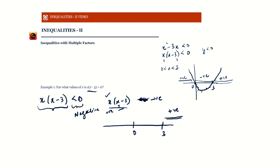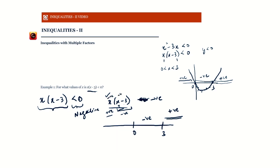Between zero and three, x is positive but x minus 3 is negative — for example, if x is two, x minus 3 becomes minus one. So exactly one factor is negative, making the product negative in that region. To the left of zero, x is also negative — for example x equals minus one gives x minus 3 equals minus four, so both factors are negative and the product is positive.